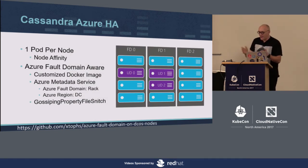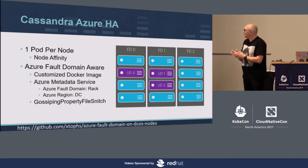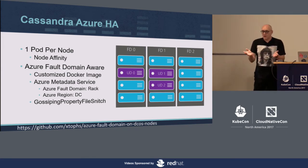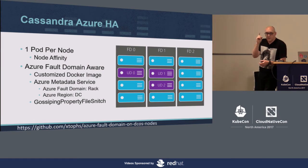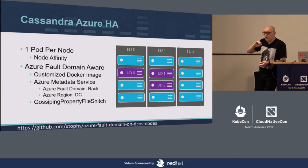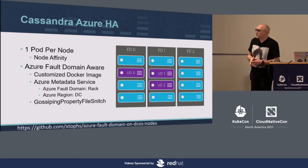We did quite a bit of work around high availability, specifically with the Cassandra setup. You're probably familiar with the concept of fault domains, where your cloud provider makes sure your virtual machines are truly highly available. Because when we provision for high availability, we typically provision two or three virtual machines and hope things go right. But there's a little trickery: if you have three virtual machines and they all run in the same rack, and that rack has a problem — like somebody trips over the power cord — or the top-of-rack switch goes bad, then all three VMs would be unavailable and your application would essentially be gone.